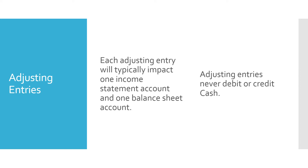When we're making adjusting entries there are a couple of things we always want to remember. Each adjusting entry is going to impact one income statement account and one balance sheet account. Adjusting entries never debit or credit cash — so if you are doing adjusting entries and you have a debit or credit to cash, you know that you've done something wrong.